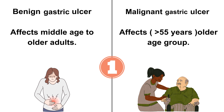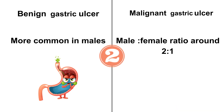Starting with difference number 1: benign gastric ulcer mainly affects middle age to older adults, while malignant affects the older age group, those who are greater than 55 years of age. Benign is more common in males, while malignant has a male to female ratio of around 2 to 1.